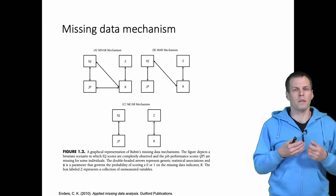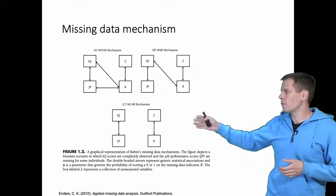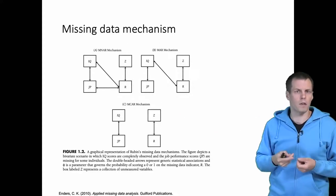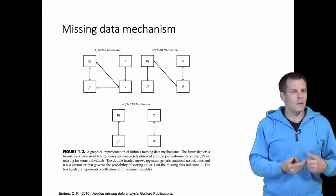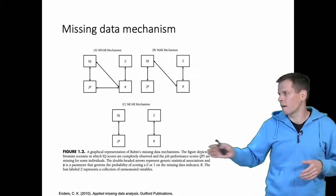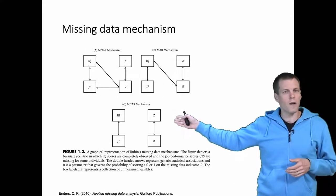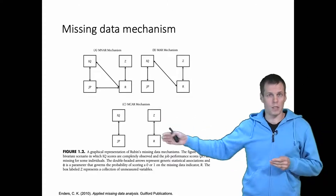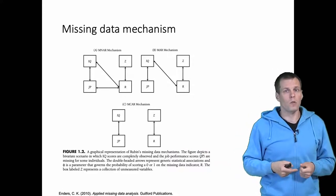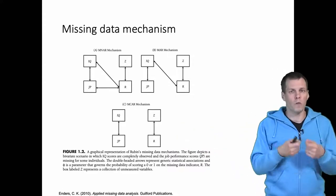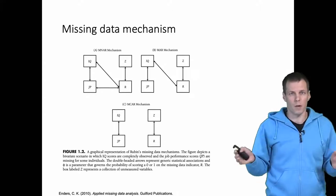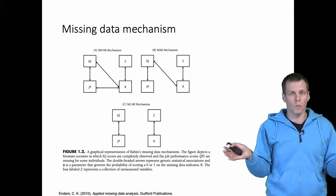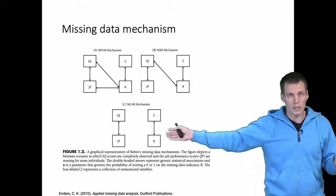Enders explains the mechanisms using this figure. Let's start with missing completely at random because that's the easiest to understand. R here is missingness; it depends on something we call Z. The Z variables are unobserved and they are not correlated with IQ or job performance. So in missing completely at random, the cause of missingness does not depend on any of the variables we observe — from the perspective of our sample, missingness is a completely random phenomenon. This is the easiest case to deal with.